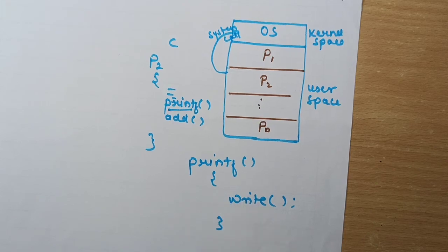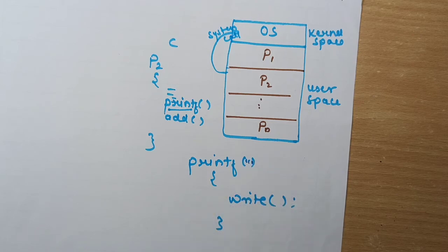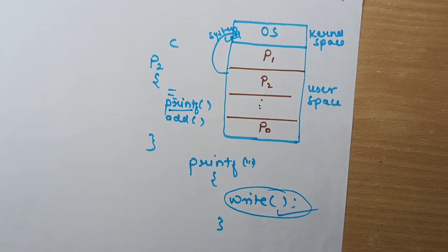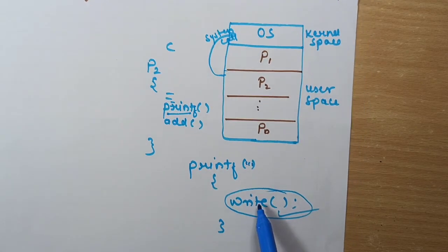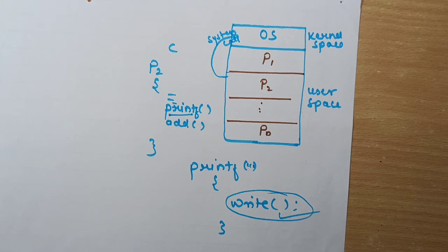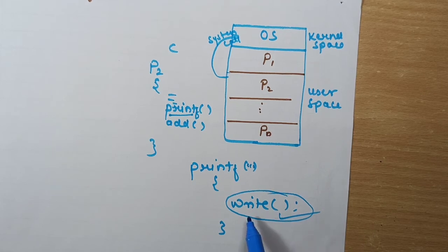When printf is defined inside the C library, it will call a system call because what we want to do inside printf is print the argument to the screen. Since we are trying to access an output device, we need to ask the operating system, so we need a system call — specifically the write system call. Using this write system call, you are actually asking permission from the operating system for accessing the monitor, and this write system call is actually writing onto the monitor.